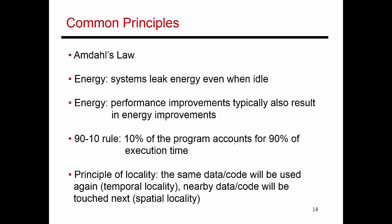A second common principle is that systems are always dissipating energy even when they are idle, because of leakage energy in any kind of system where you can't completely shut off the power supply. So if a system is operating at high utilization, it may consume 100 watts of power. At low utilization or even zero utilization, that system will typically consume close to 30 watts — that's because of leakage energy.